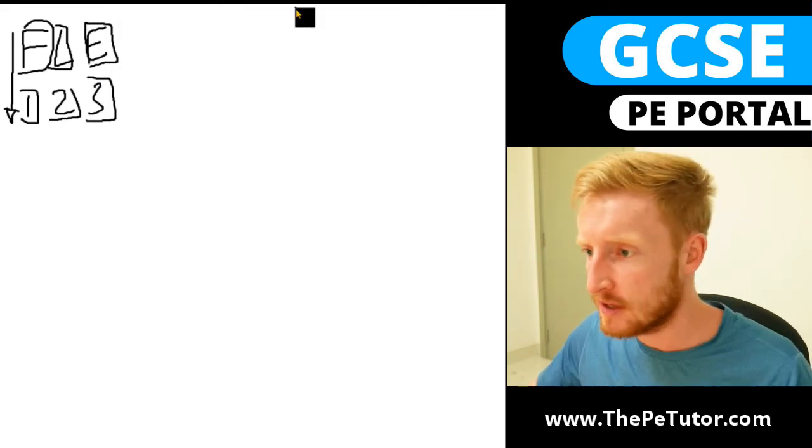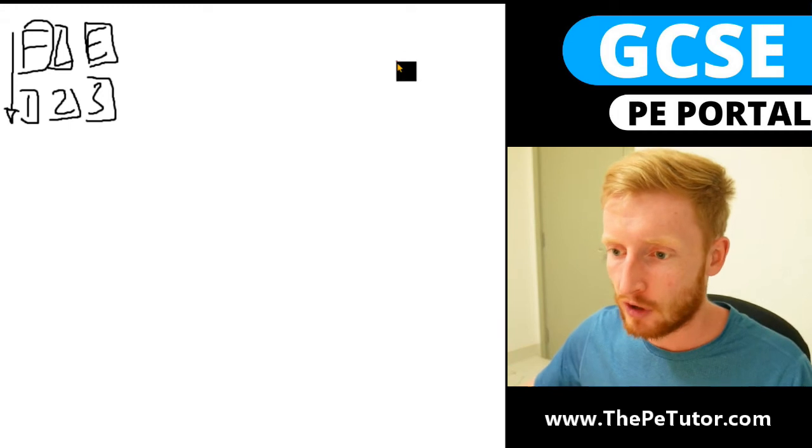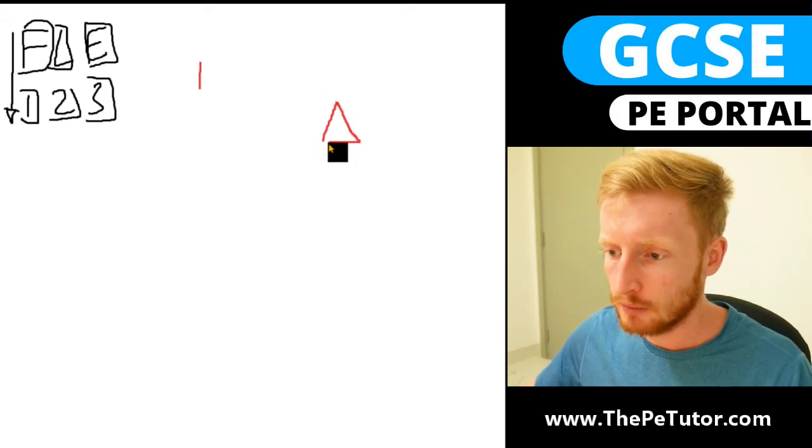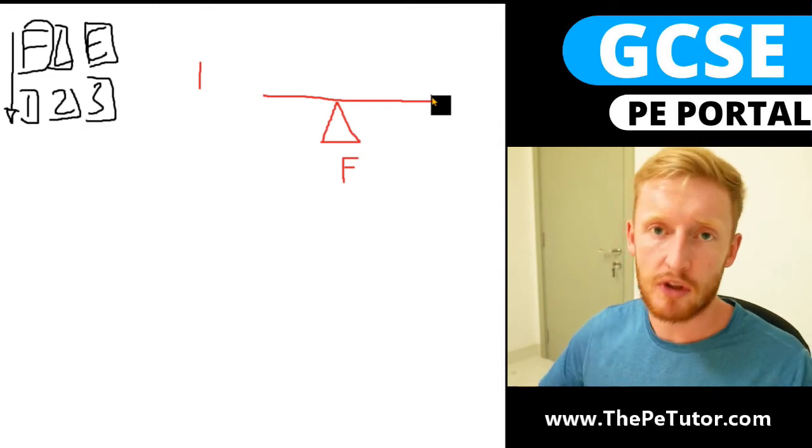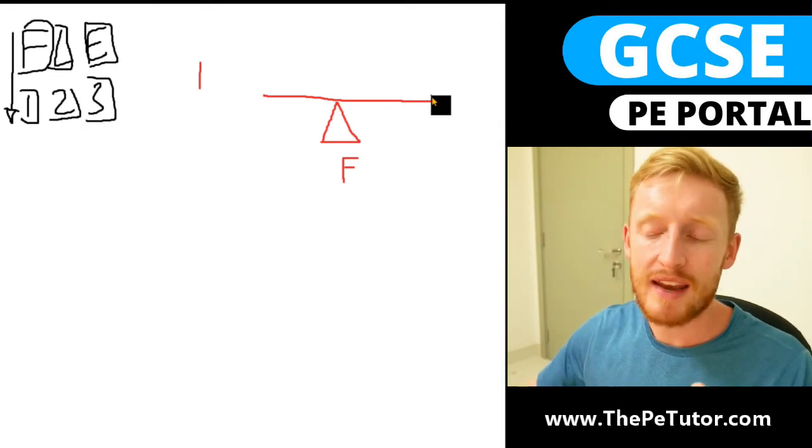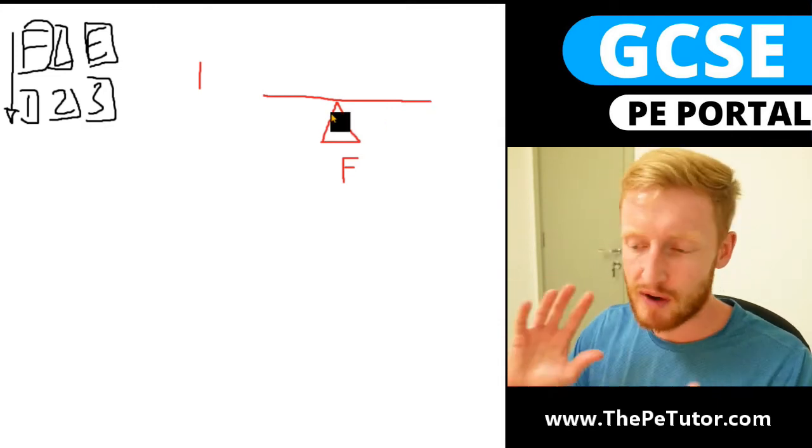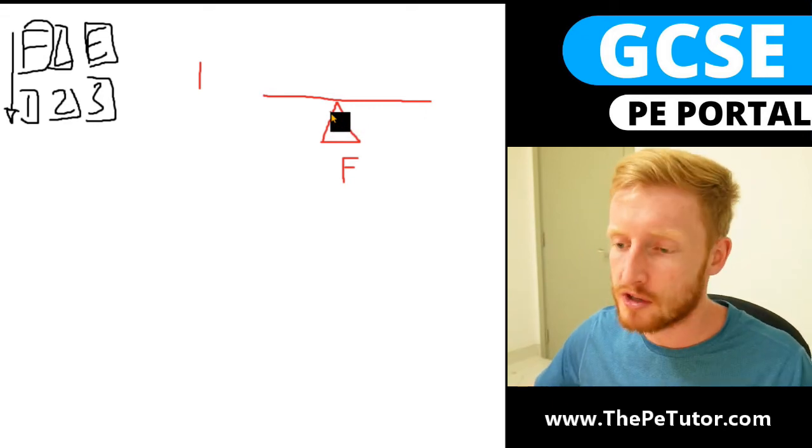So if we were to just picturize these to start with we'll go with the first class lever system and we start with the fulcrum in the middle which is our F. We then have the rigid bar and then the other two components, the load and the effort, they can go in either order.